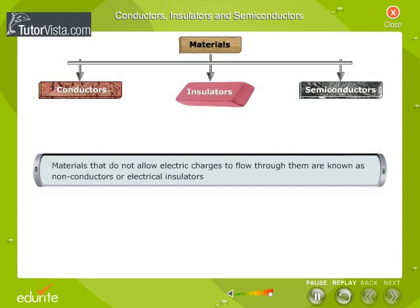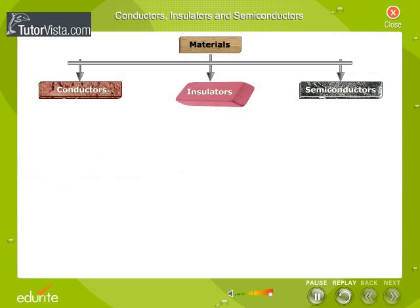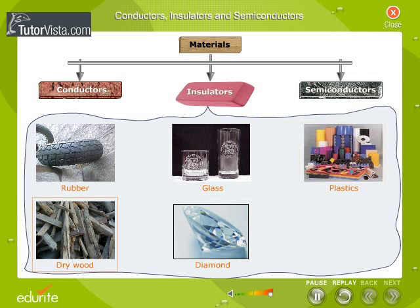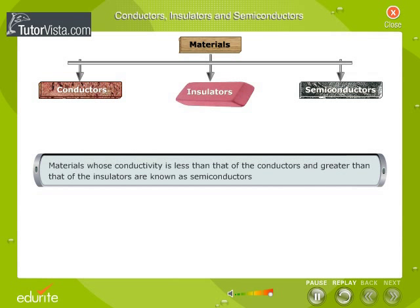Materials that do not allow electric charges to flow through them are known as Non-Conductors or Electrical Insulators. Rubber, Glass, most Plastics, dry Wood, Diamond, etc. are examples of good Insulators.